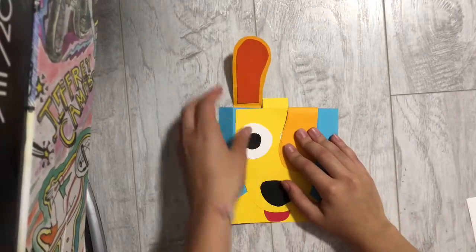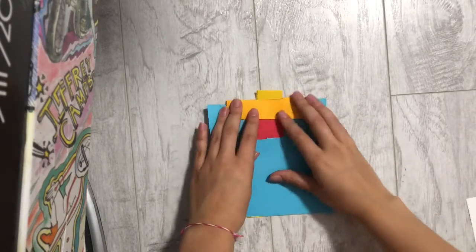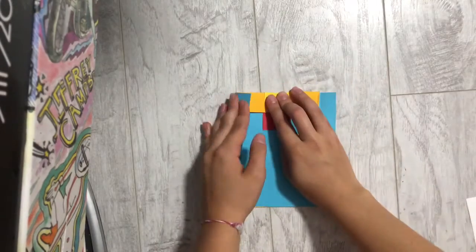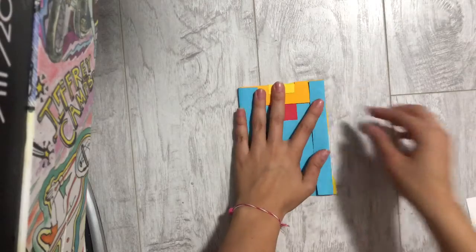For our next step we are going to bend the ears, flip over our card, and bend the yellow piece and the blue pieces back.